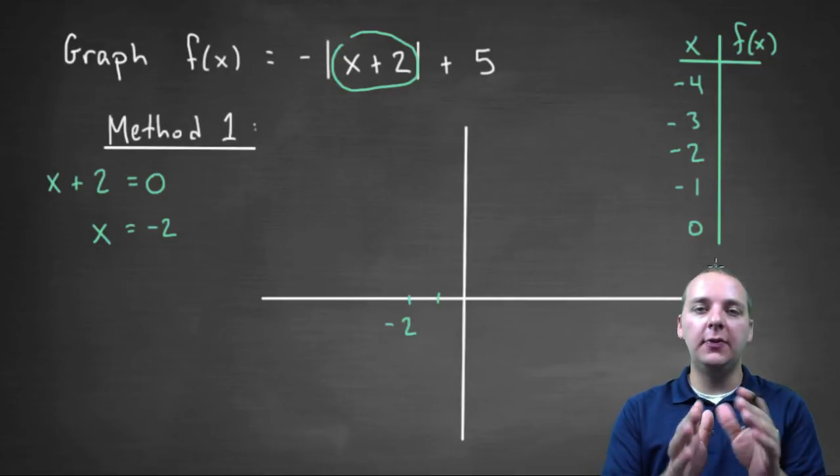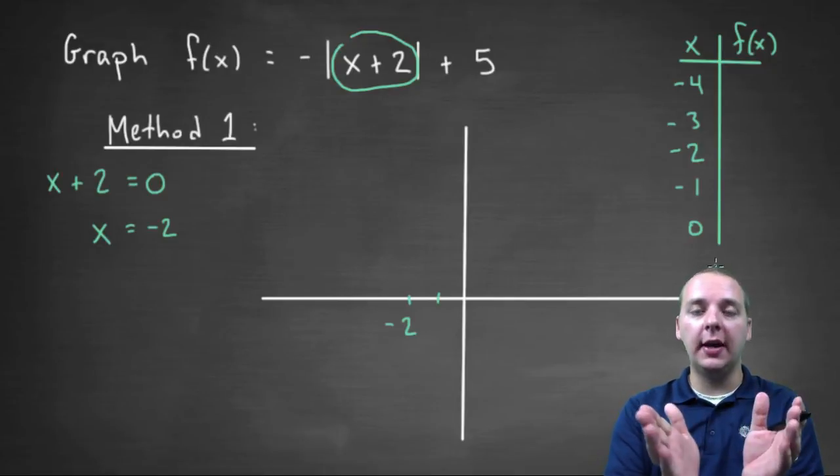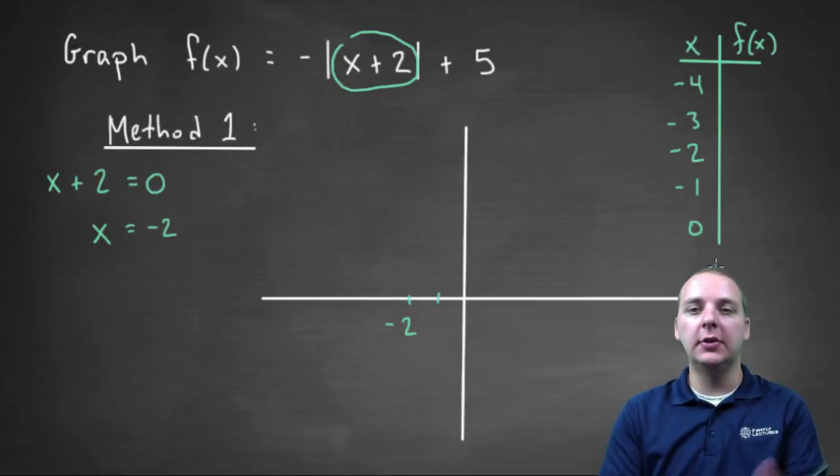And the idea is this. The idea is if you can figure out what's going on around the vertex, you'll get a pretty good idea of what the graph of the function looks like.